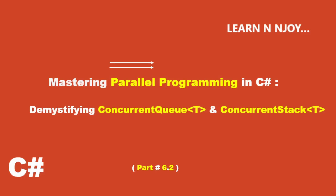Hello friends, welcome back to our channel. Today, in part 6.2 of our Mastering Parallel Programming series in C#, we are diving into two concurrent collection classes: ConcurrentQueue and ConcurrentStack. These classes help us avoid the hassle of implementing our own locking mechanism for concurrent access.